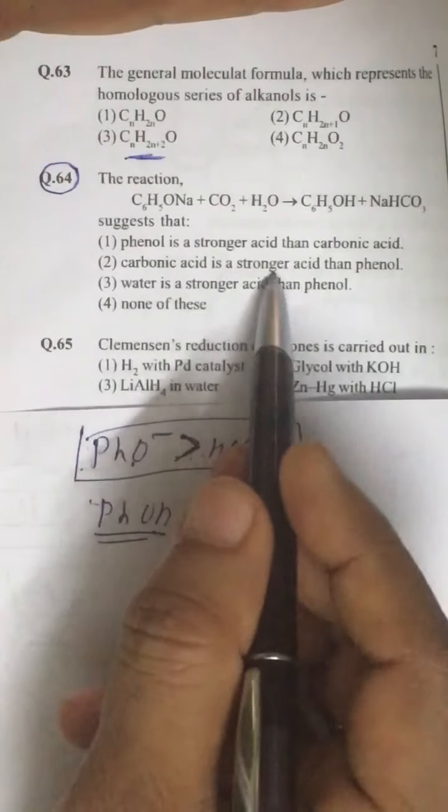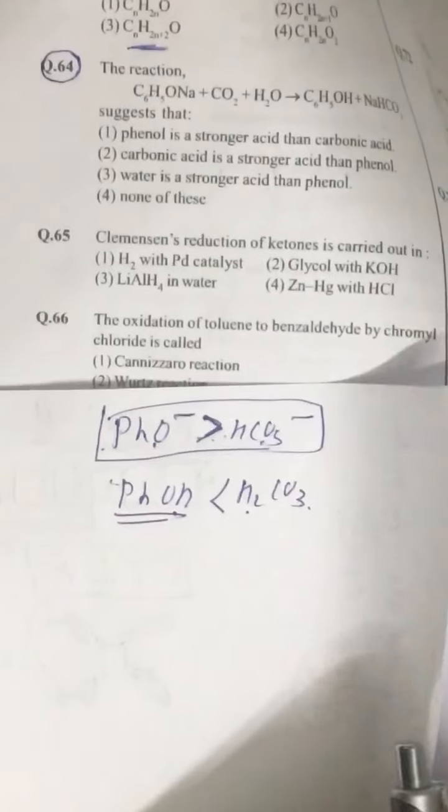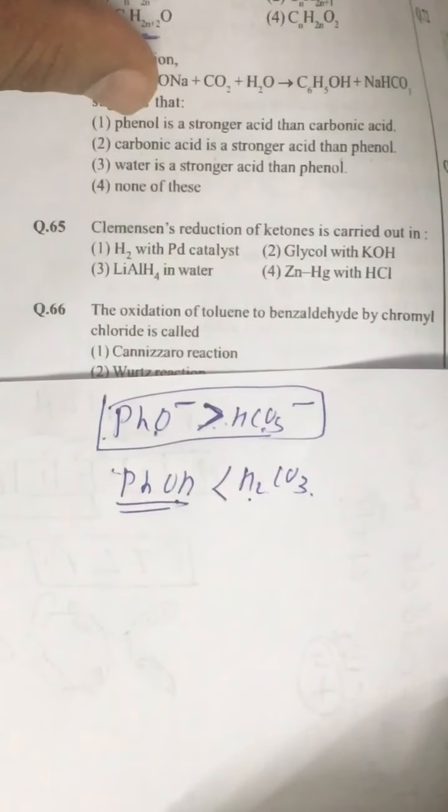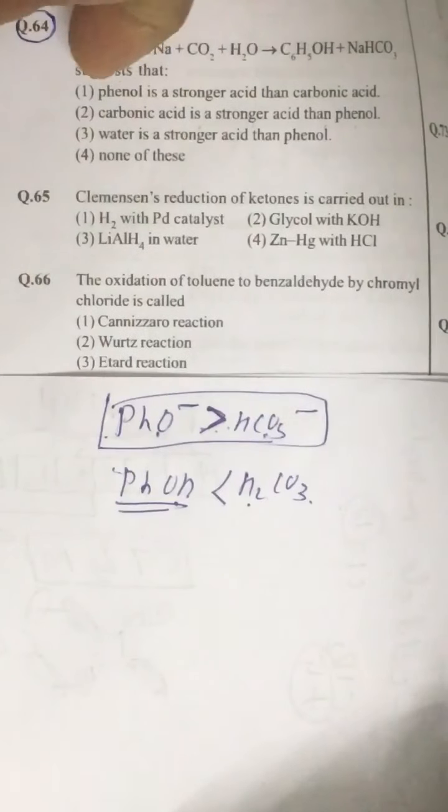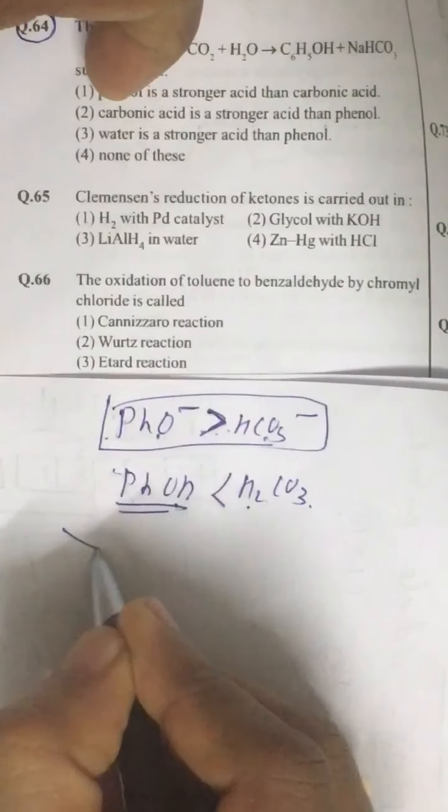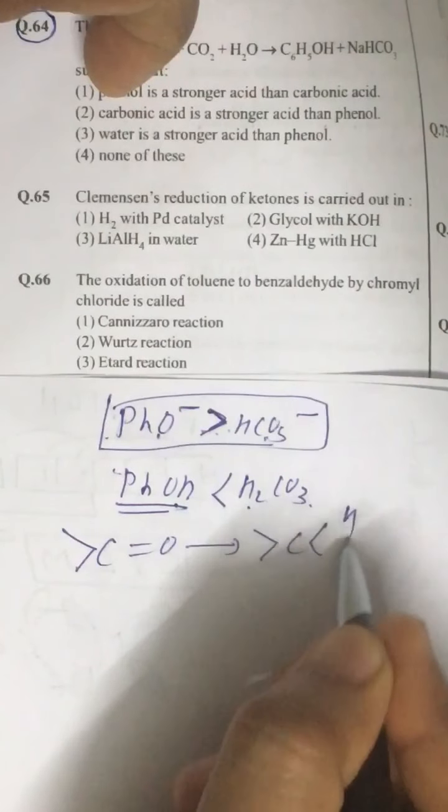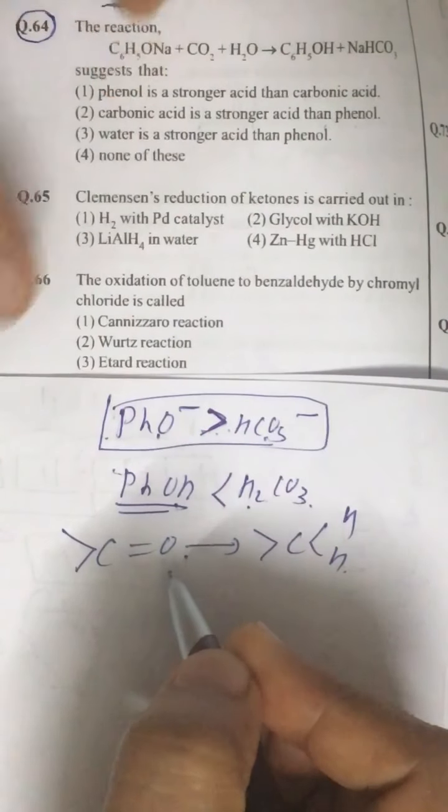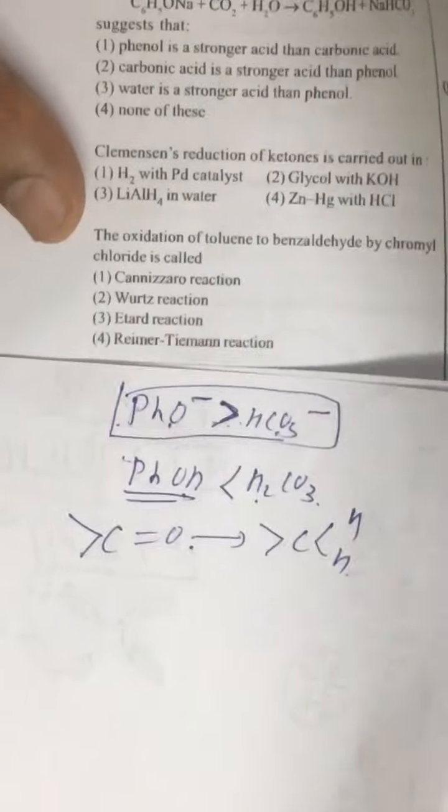Look at question number 65. Clemmensen reducer is zinc amalgam and HCl. Clemmensen reducer is zinc amalgam and HCl. It reduces carbonyl group into methylene group. Now one more such reduction is called Wolff-Kishner reduction and the reducing agent is hydrazine and KOH.